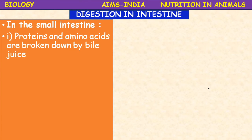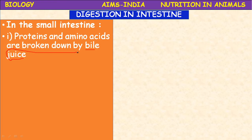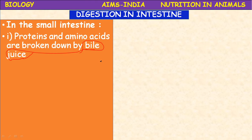In the small intestine, proteins are broken down into amino acids. To correct an earlier statement — bile juice does not act on proteins. Bile juice helps in the emulsification of fats. The fats, which are very complex compared to carbohydrates and proteins, are converted into micro-colloidal particles by the action of bile salts — sodium cholate and sodium deoxycholate. This process is called emulsification, and after emulsification the fats are ready for digestion.